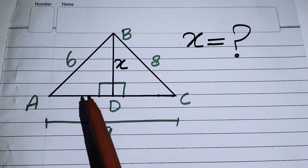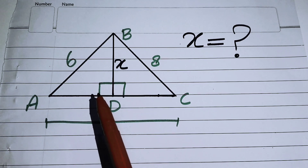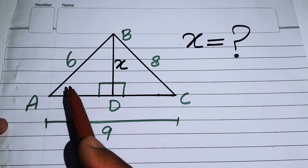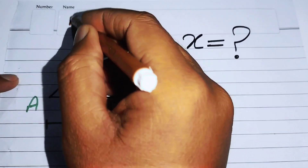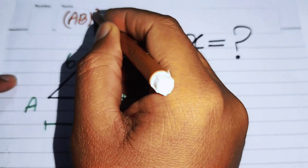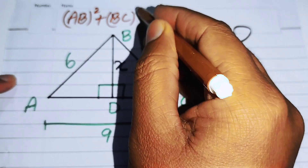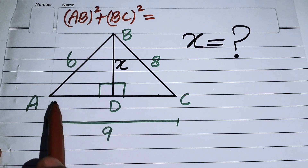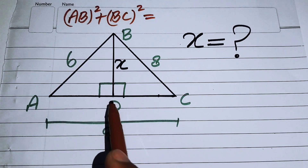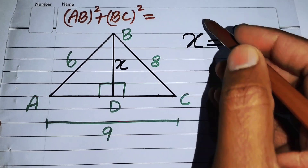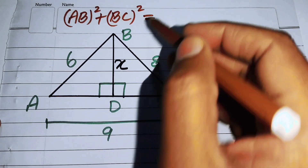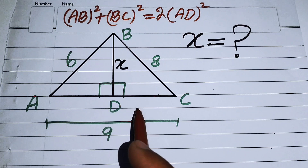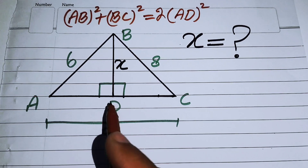Now we write this theorem using mathematical notation. We take the two sides AB and BC. The sum of their squares gives us AB² + BC², which equals twice the square of half the third side. The half of the third side AC is AD, so we write twice of AD².